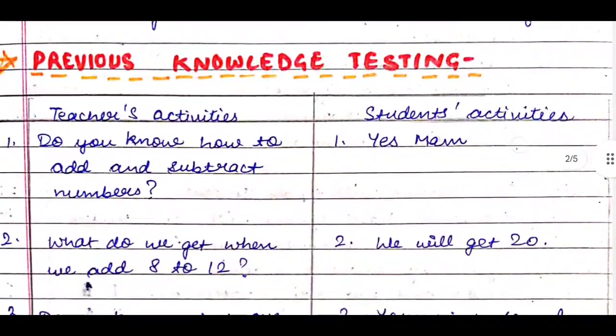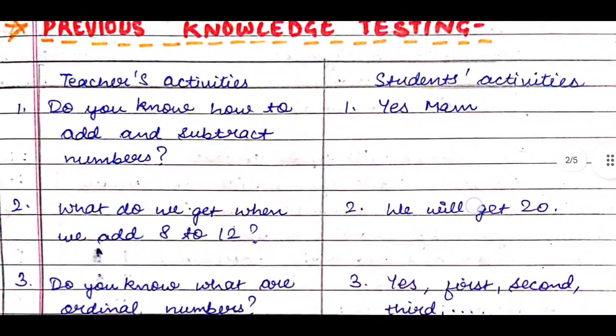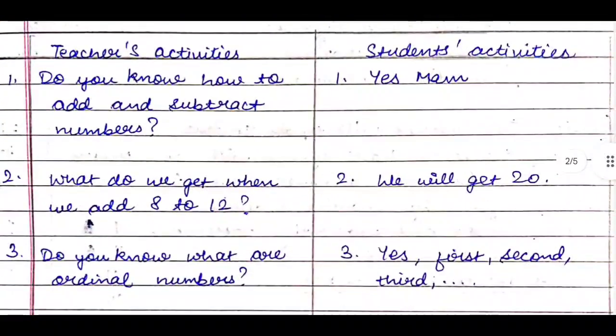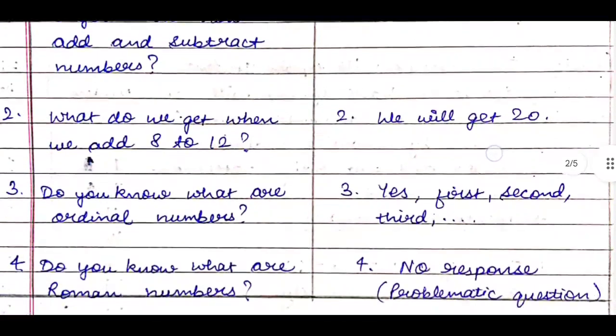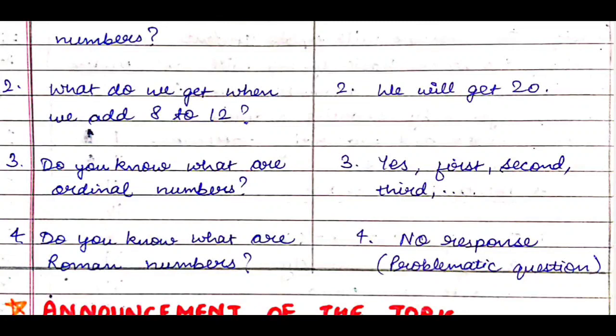Then next heading is previous knowledge testing—we need to test their previous knowledge. Here we make two columns in our lesson plan: teacher's activities and student's activities. The teacher will ask questions and the students will answer. The expected answers are written over here. First question: Do you know how to add and subtract numbers? Answer: Yes ma'am. Second: What do we get when we add 8 to 12? Answer: We will get 20. Then: Do you know what are ordinal numbers? Answer: Yes, first, second, third. They have already studied.